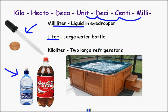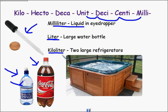A water bottle about 40% larger than the one I carry around would be about a liter. You frequently see these in the supermarket — these are two-liter bottles of soda. And a kiloliter is a thousand liters, so thousands of these bottles. A hot tub would be a kiloliter.